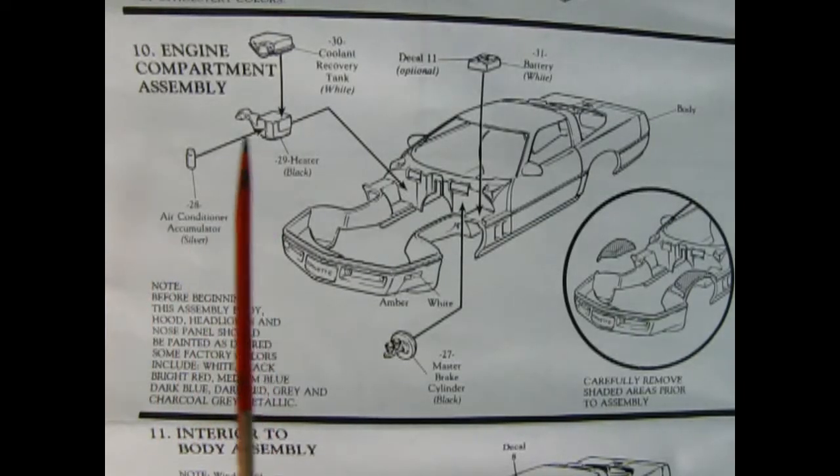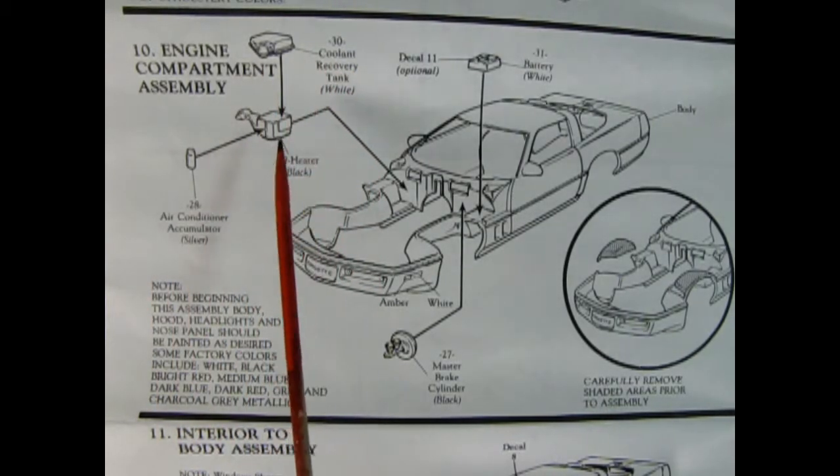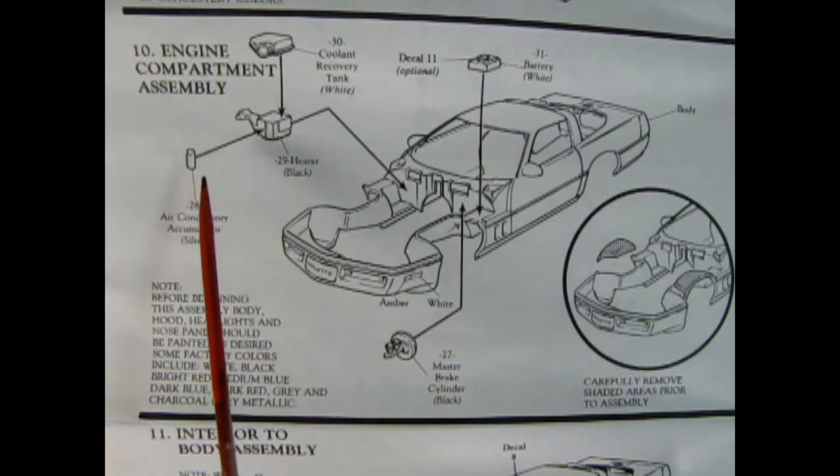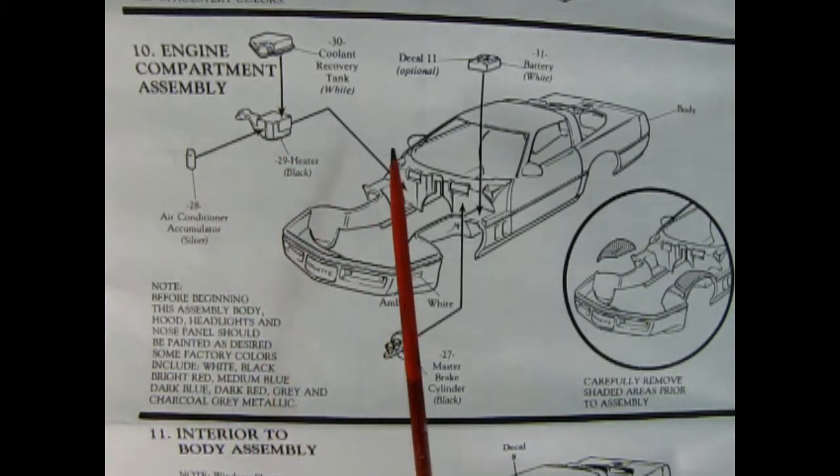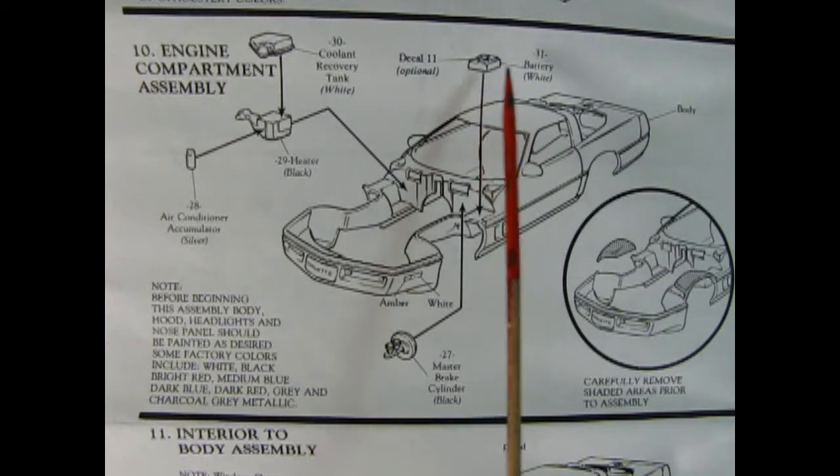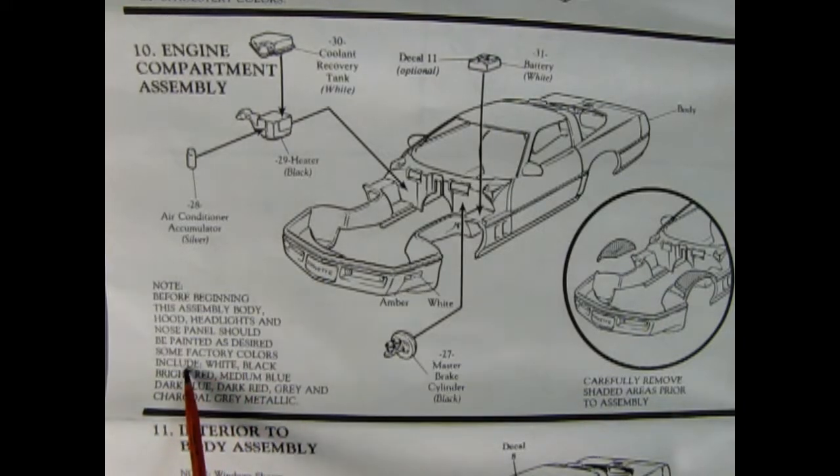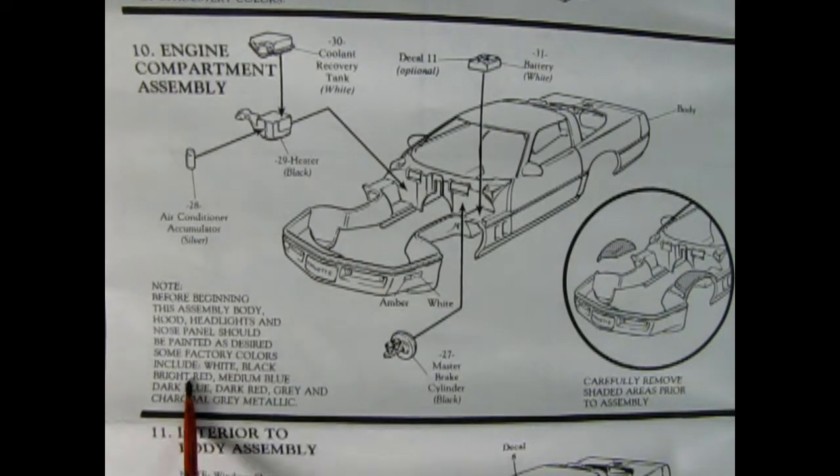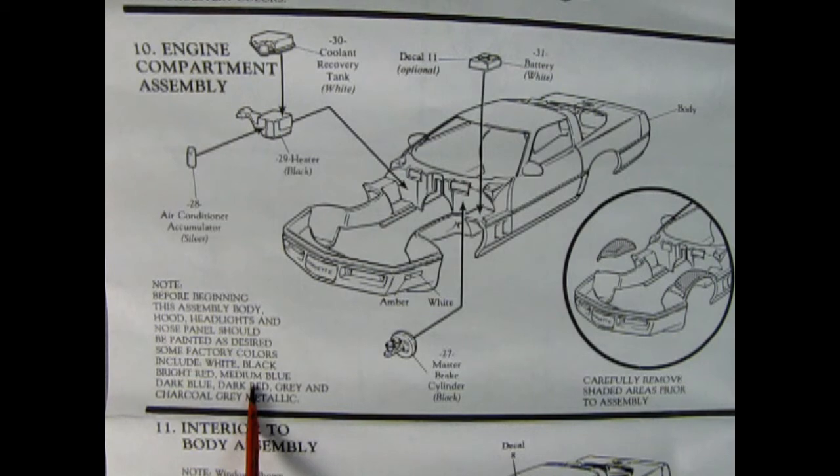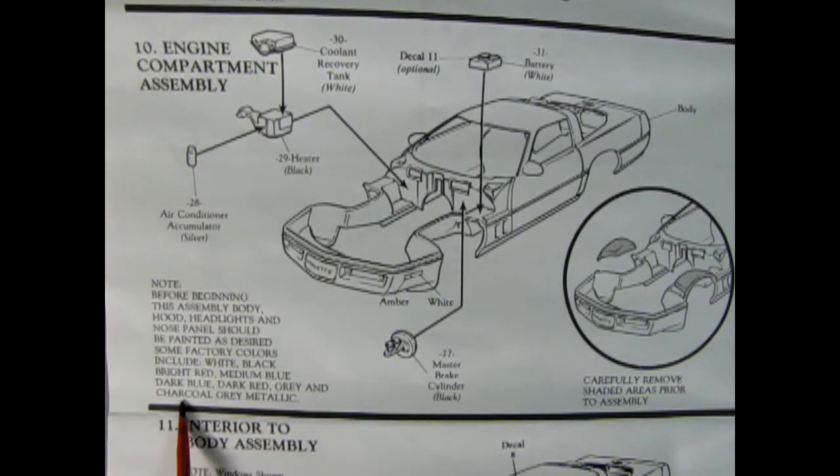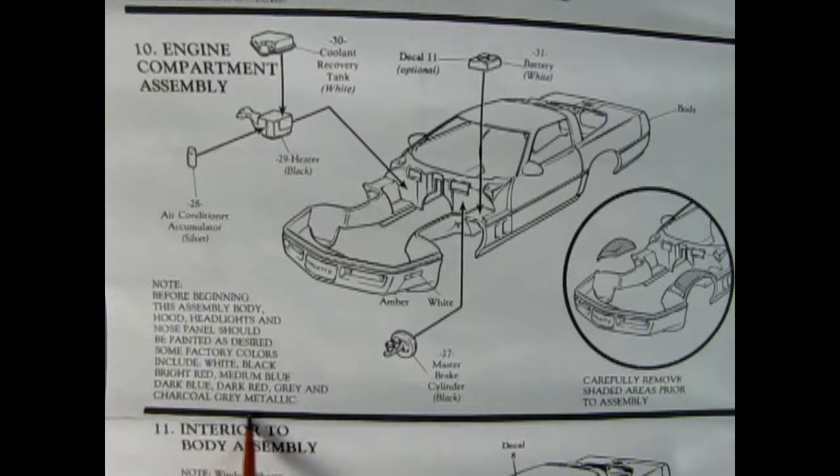Panel 10 shows our engine compartment assembly. We've got a coolant recovery tank gluing on top of our heater and our air conditioner accumulator will glue on there. We've got this neat battery that drops in place. There's a decal for it and our master brake cylinder. It says carefully remove shaded area prior to assembly. And note before beginning this assembly body hood headlights and nose panel should be painted as desired. Some factory colors include white black bright red medium dark blue dark red gray and charcoal gray metallic.